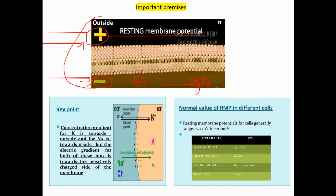There is a negative net charge inside and a positive net charge outside. This is recognized as a resting membrane potential, and it is typically negative because it's negative towards the inside. Different types of cells have different resting membrane potentials. For instance, skeletal muscle has minus 90 millivolts — this can actually be measured with instruments. Smooth muscle is about minus 60 millivolts, cardiac muscle is between minus 85 and minus 90, and nerve cells are about minus 70 millivolts.